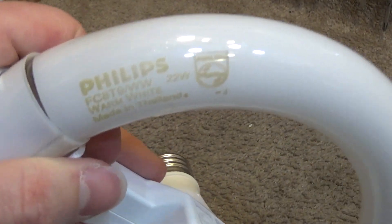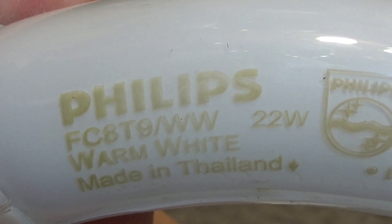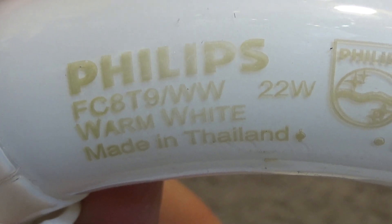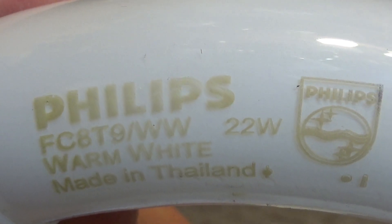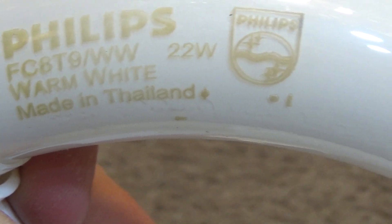And here's the information on the bulb itself. It's a Circoline bulb. The information is as follows: Philips, model number FC8T9-WW, 22 watts, warm white, made in Thailand.